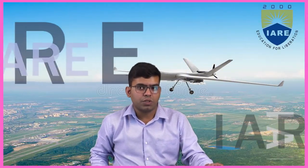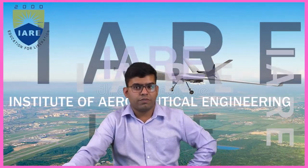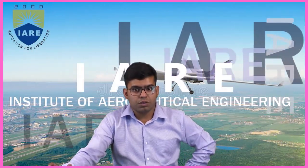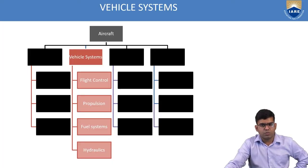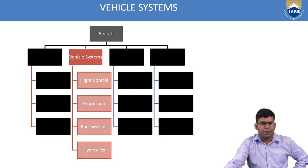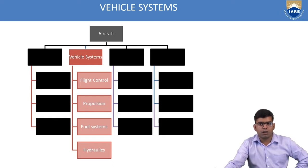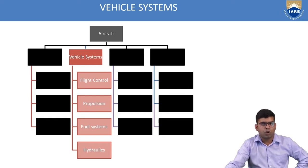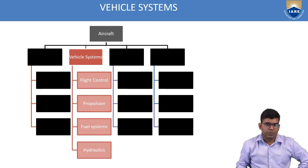Today we will be looking at the second physical subsystem, which is vehicle systems. In vehicle systems you have flight controls, propulsion, fuel systems, and hydraulic systems. The others have been blacked out since we have been covering the same topic for the past two lectures.